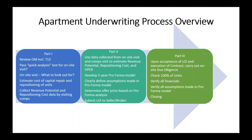Part one of the underwriting process will consist of the offering memorandum, if a broker is involved, and the T12 P&L — the trailing 12 months of income and expenses profit and loss statement of the apartment complex. We'll do a quick analysis to determine whether an on-site visit is warranted, perform an estimated cost of capital repair and repositioning of units, and collect data from comparable properties.